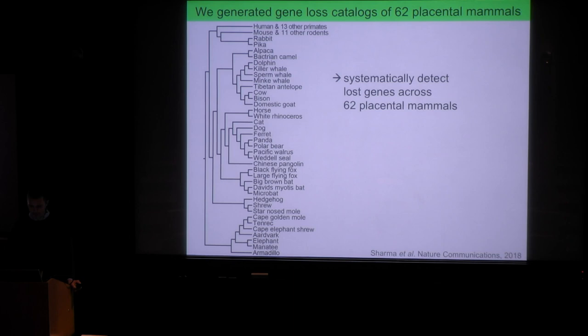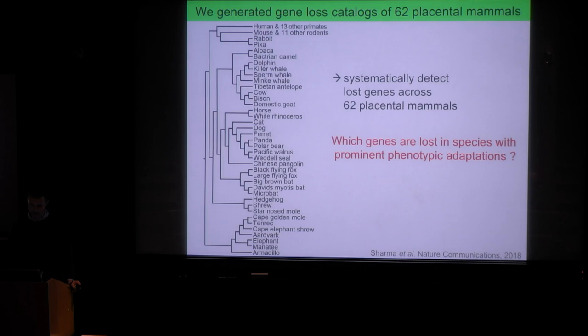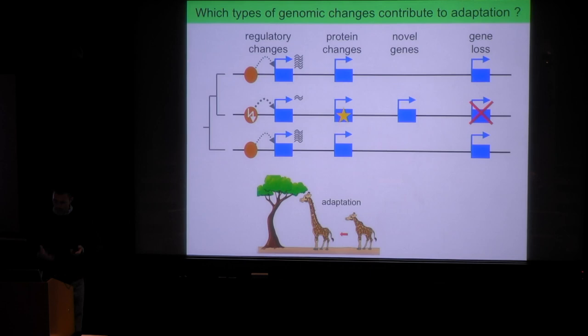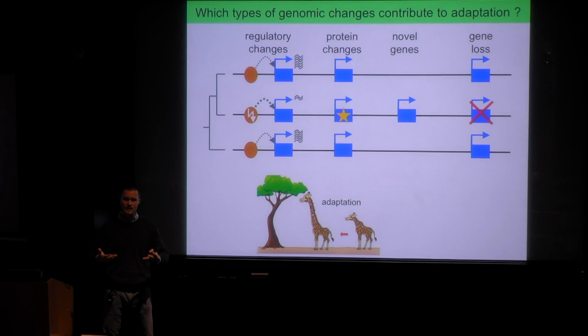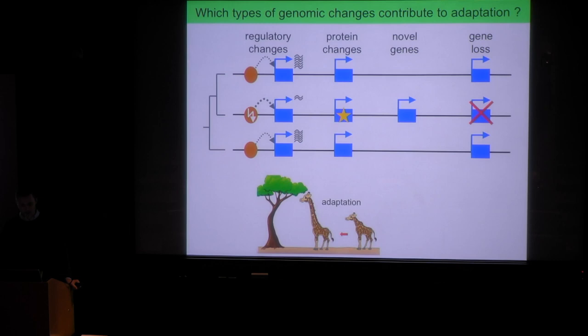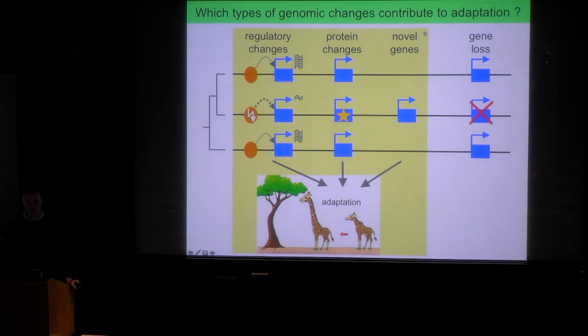With this rich dataset you can address many interesting questions. The most exciting question is: which genes are lost in species that exhibit obvious, prominent phenotypic adaptations? If we think about how an adaptive trait evolves — one that enhances fitness and survival — we would typically expect changes in gene expression, optimized protein function, or novel genes. But we found evidence that sometimes losing ancestral genes can also contribute to adaptive traits.